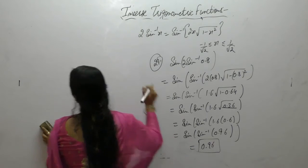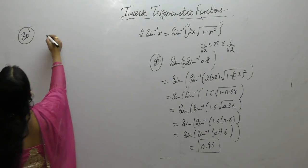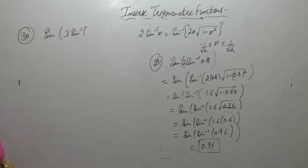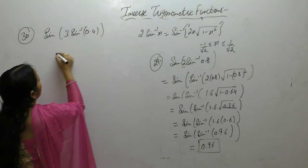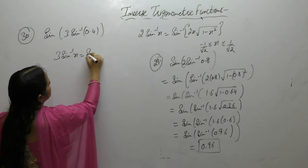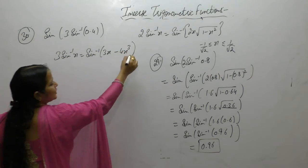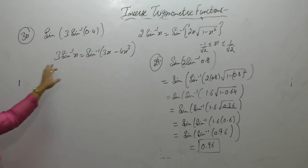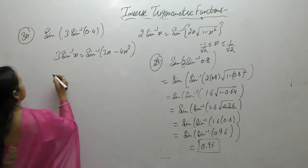Evaluate sin(3sin⁻¹(0.4)). The formula is 3sin⁻¹x = sin⁻¹(3x - 4x³), based on the sin 3x formula. Apply this formula for sin⁻¹.